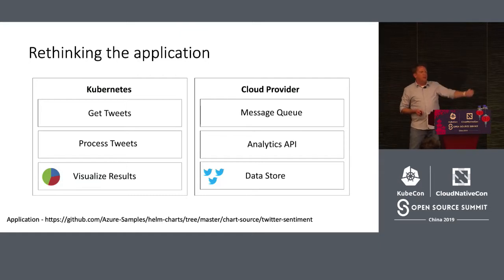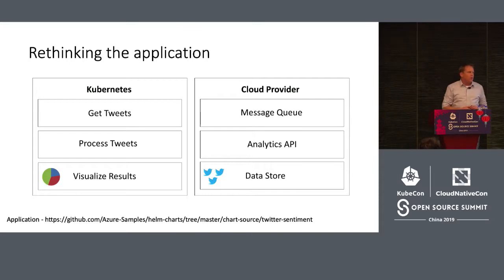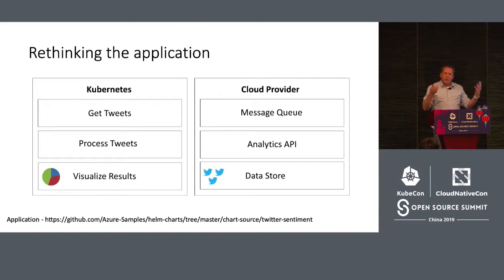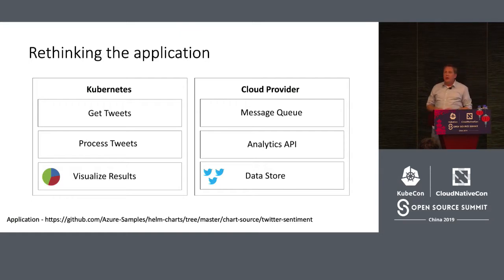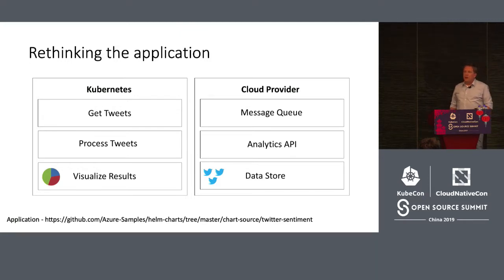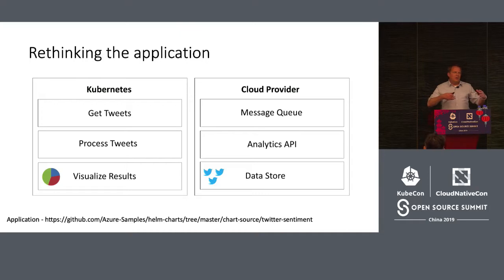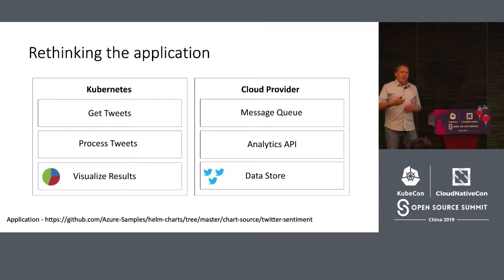This is a very different type of application than what I was deploying 20 years ago. Back then I had an executable, an MSI, or some sort of installer — one thing — and I'd install it on a server and that was my application. When I first built this application, I went and manually created the message queue and the data store, then had to take connection strings and bring them over into Kubernetes as environment variables. That was very clunky. At one point it took me a couple hours, and then I thought I was sophisticated and wrote a bash script to do it.